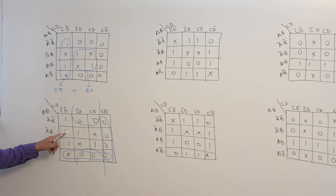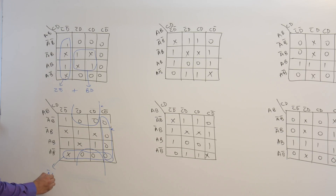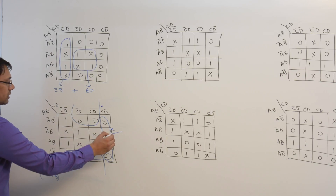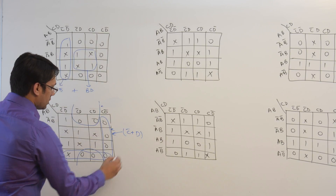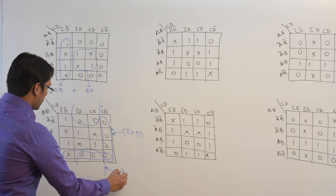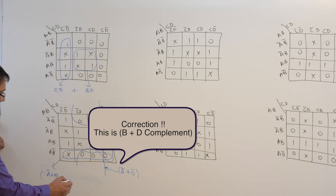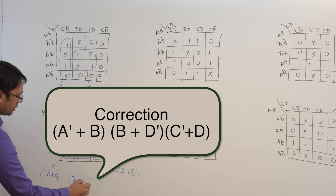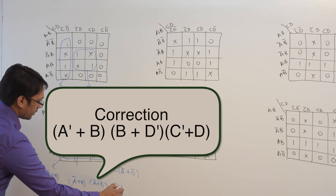Here I am not associating any don't care combination with the zeros. This subcube is representing the POS expression A complement plus B. This subcube is representing C complement plus D. This subcube is representing A complement plus D complement. Therefore, the POS solution will be (A complement plus B) dot (A complement plus D complement) dot (C complement plus D).